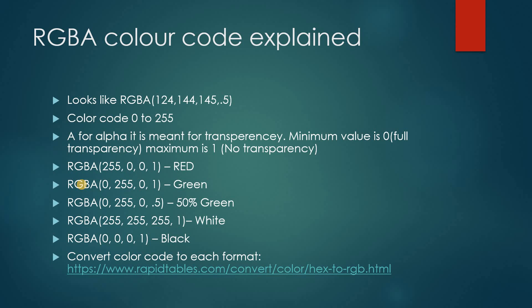Then RGBA — it has an extra channel called alpha. Alpha is for transparency. In RGBA, every color has a code from 0 to 255. RGBA is a function in PowerApps. If you put 255, 0, 0, 1 — then red is at full color, there is no color for green and blue, and alpha is 1, meaning there is no transparency. If alpha is 0.5, it means 50% transparency. So this is how you can put your own color code based on your requirement.